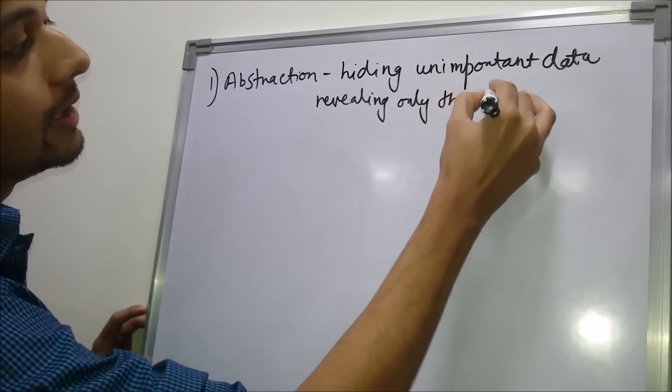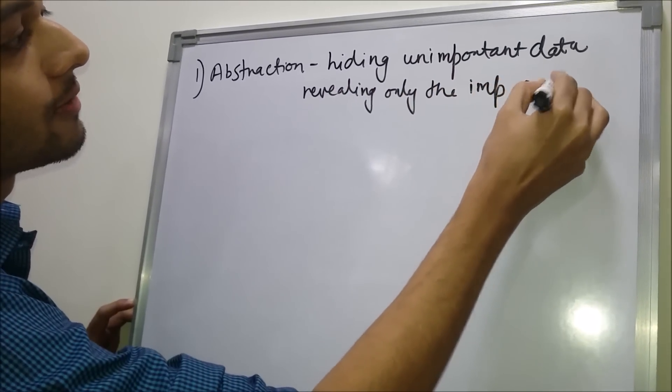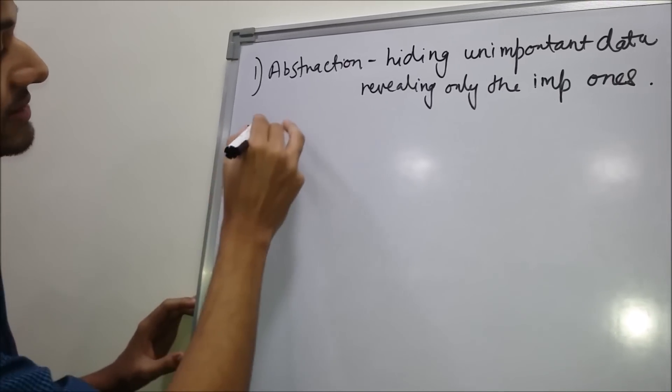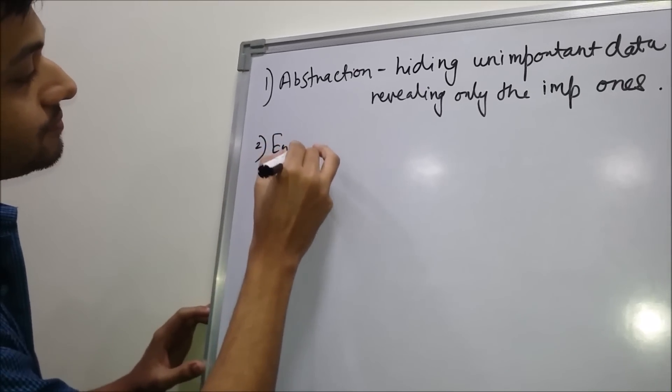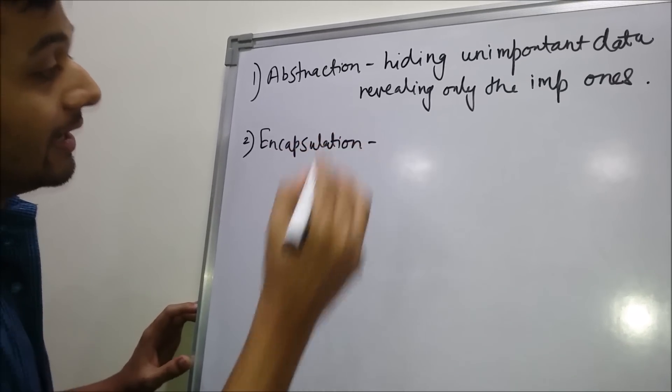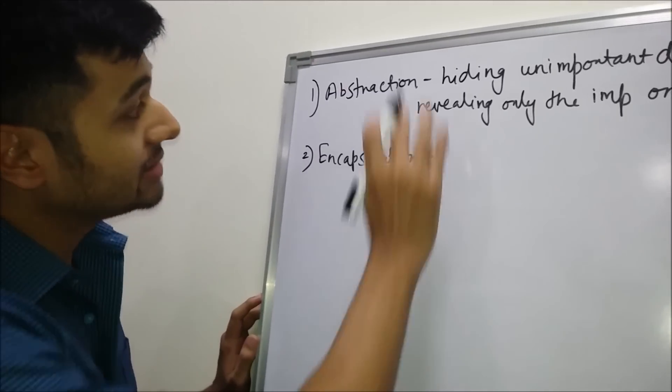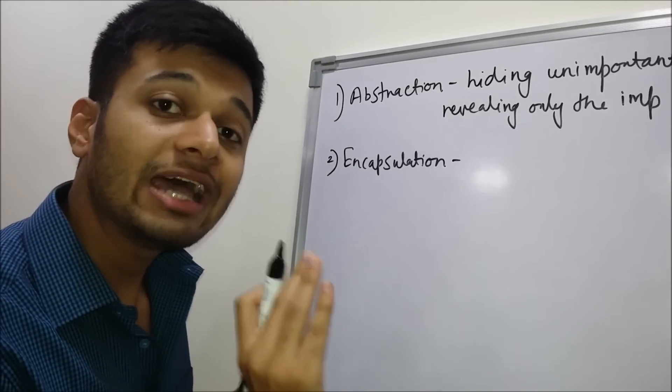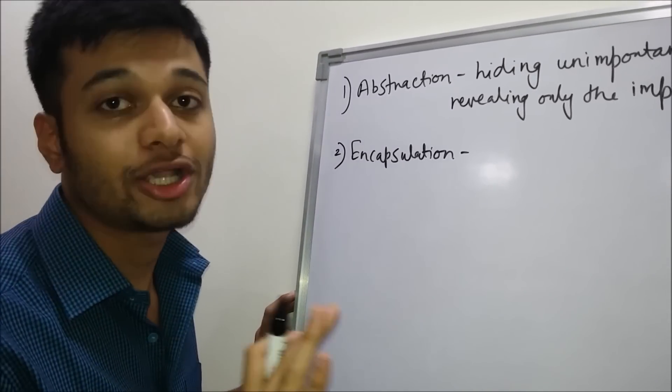The second one is encapsulation. Encapsulation means hiding the data. It is similar to abstraction, but the difference is that encapsulation means hiding the data for the purpose of protection.